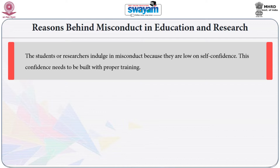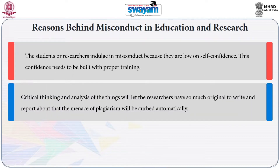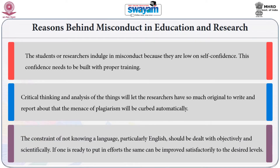The students or researchers indulge in misconduct because they are low on self-confidence. This confidence needs to be built with proper training. Critical thinking and analysis of things will let the researchers have so much original content to write and report. Thus, the menace of plagiarism will be curbed automatically. The constraint of not knowing a language, particularly English, should be dealt with objectively and scientifically. If one is ready to put in efforts, the same can be improved satisfactorily to the desired levels.